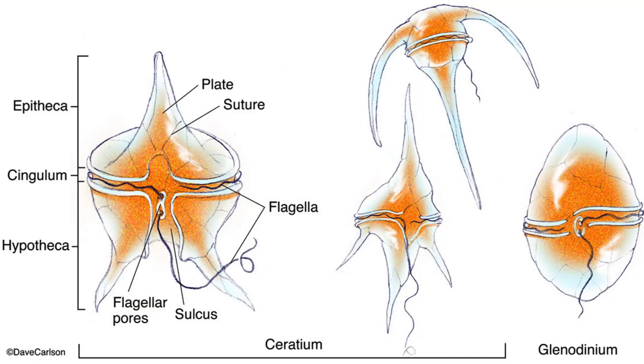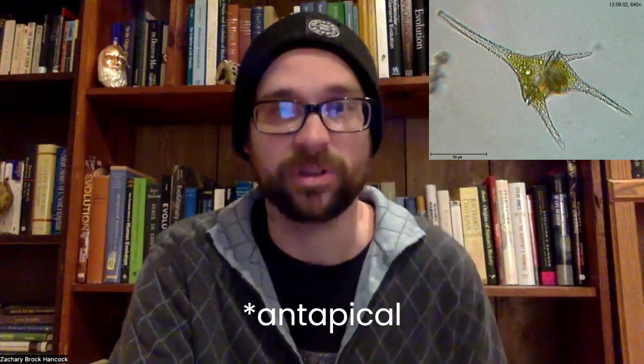The name is quite apt. The dinoflagellates have paired flagella that sit within grooves that streak across the hardened case that the critter lives within, called the theca. In addition to living within the theca, the dinoflagellates have stiffened their cellular membrane with the addition of cellulose to the alveoli. While they have many different shapes, the typical dinoflagellate has an apical horn and antipodal horns.